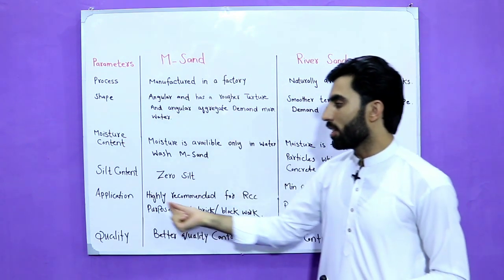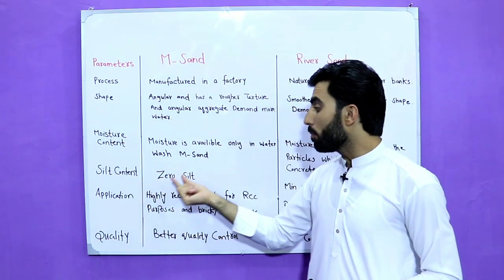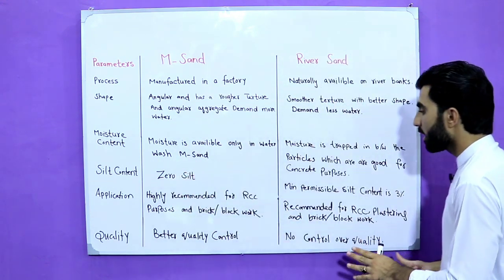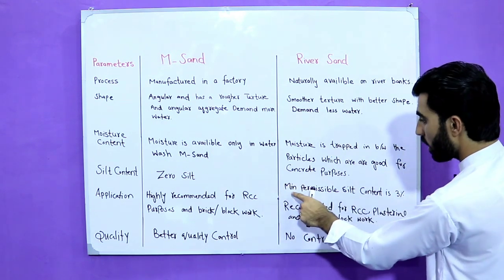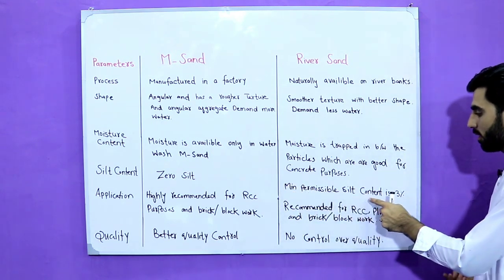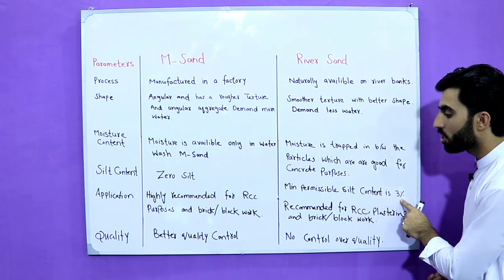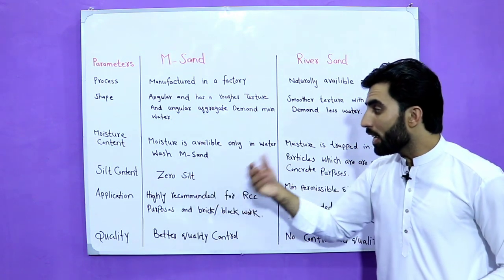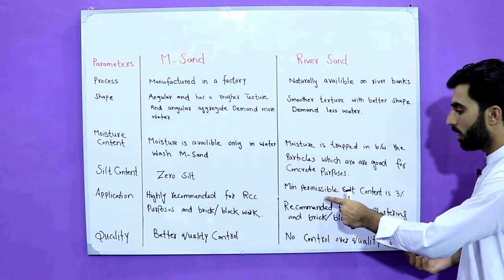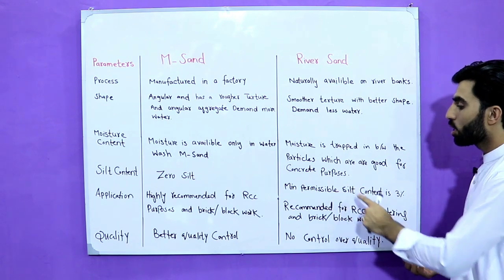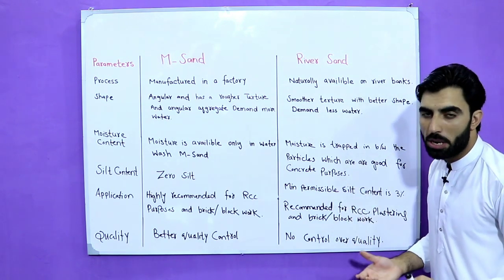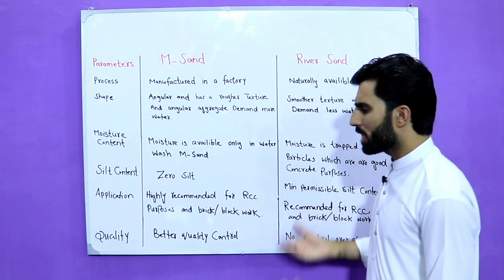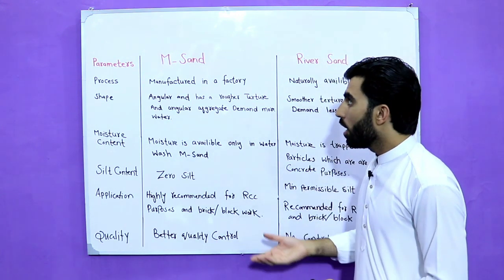Regarding silt content: in manufactured sand there is zero silt, but the minimum permissible silt content in river sand is 3%. If silt content is more than that in natural or river sand, it is not suitable for use in building construction because it is harmful.